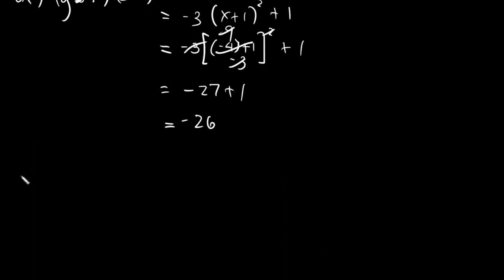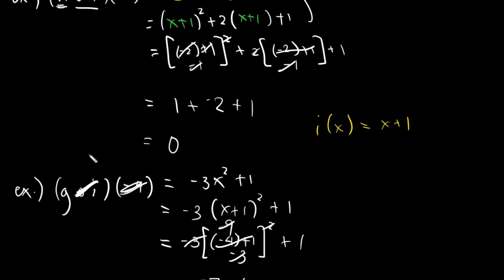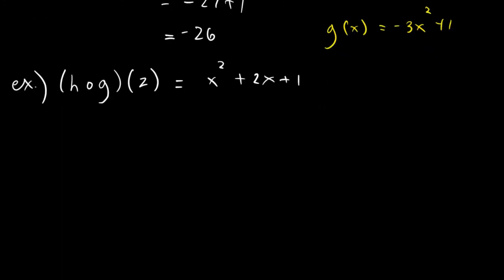Another example. Say we have h circle g of positive 2. Our h is of course x squared plus 2x plus 1, and g of x is equals to negative 3x squared plus 1. Again, take a note of h. All the values of g will be replacing the x here. Look at the given, and all x's will be replaced by negative 3x squared plus 1 squared plus 2x. So 2, negative 3x squared plus 1, plus 1.